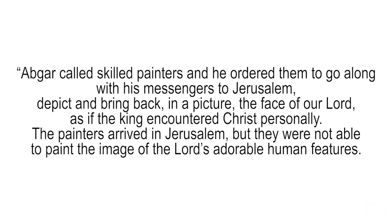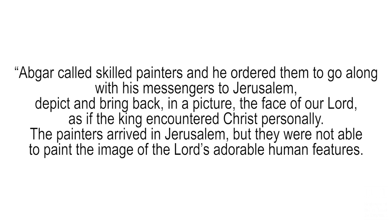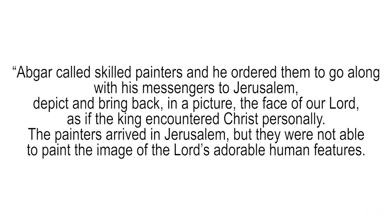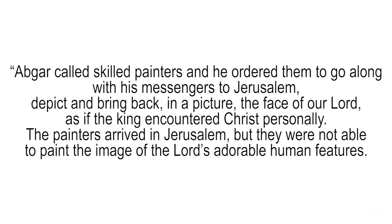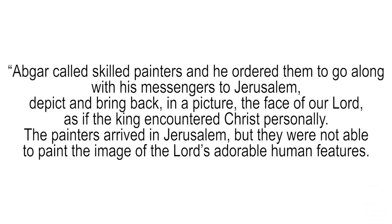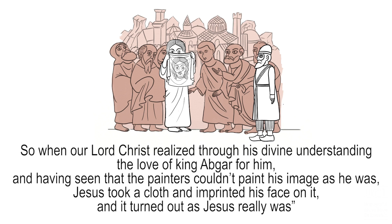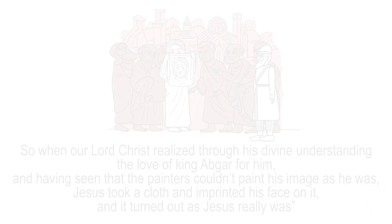Abgar called skilled painters and ordered them to go along with his messengers to Jerusalem, depict and bring back in a picture the face of our Lord, as if the king encountered Christ personally. The painters arrived in Jerusalem but they were not able to paint the image of the Lord's adorable human features. So, when our Lord Christ realized, through his divine understanding, the love of King Abgar for him, and having seen that the painters couldn't paint his image as he was, Jesus took a cloth and imprinted his face on it, and it turned out as Jesus really was.